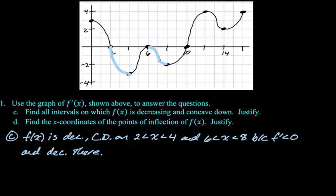Find the x coordinates of the points of inflection of f of x and justify. There are a lot of points of inflection. So it's all the relative maximums and minimums, which remember relative maximum does not include endpoints. So even though it looks like at 0 and at 16, we have relative maximums, not counting them, they're not a part of it.